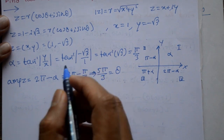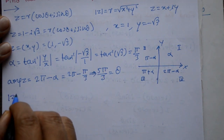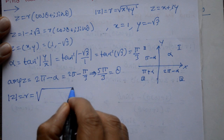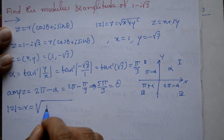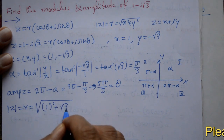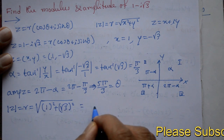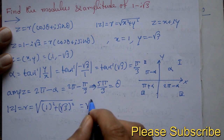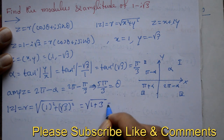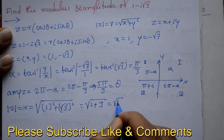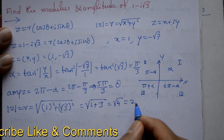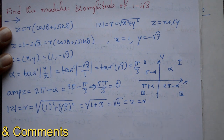Modulus of z nikala hai. Mod z kya hai? R hai. R matlab square root of x square plus y square. X kya hai — 1, so one square. Plus y — root 3 whole square. That is equal to square root of 1 plus 3, square root of 4. Mod z is equal to r equal to 2.